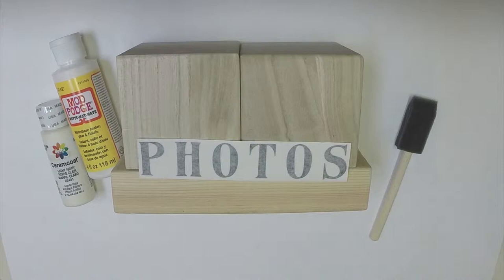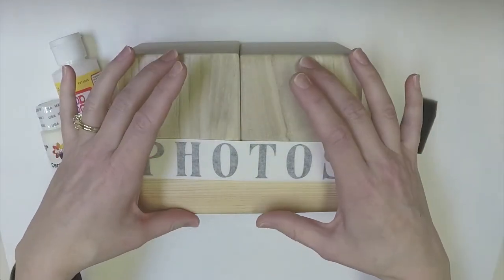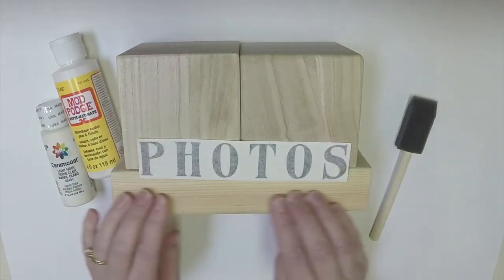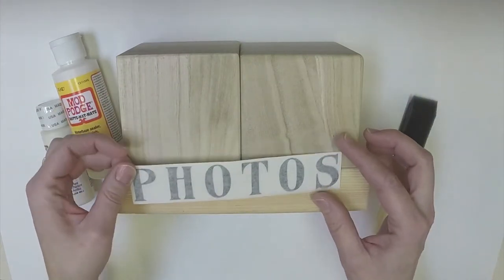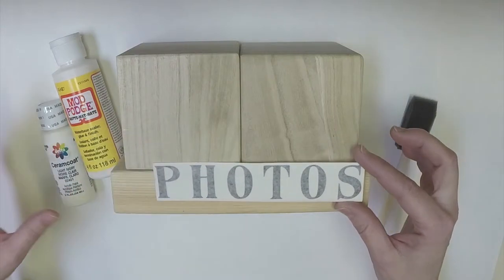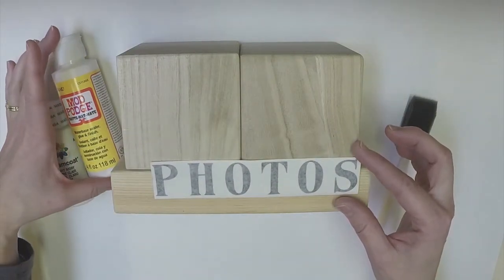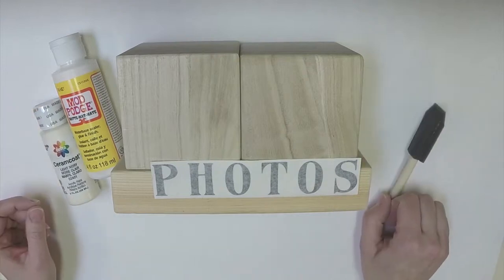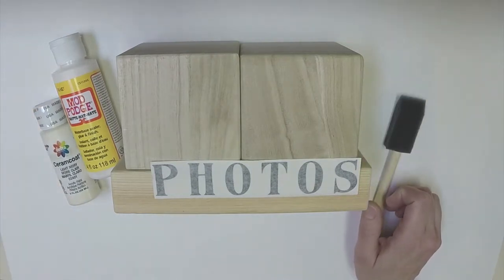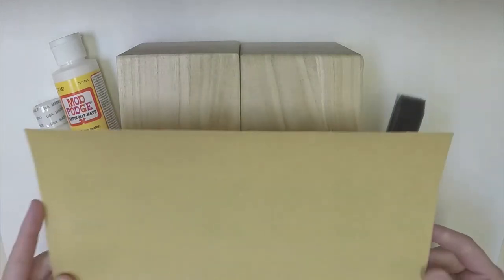First of all let's go through the contents of your kit. You will have received two wooden blocks as well as a wooden base. You will have a vinyl word as well as a bottle of Mod Podge and a bottle of paint, a foam brush, and you also will have a sheet of sandpaper.